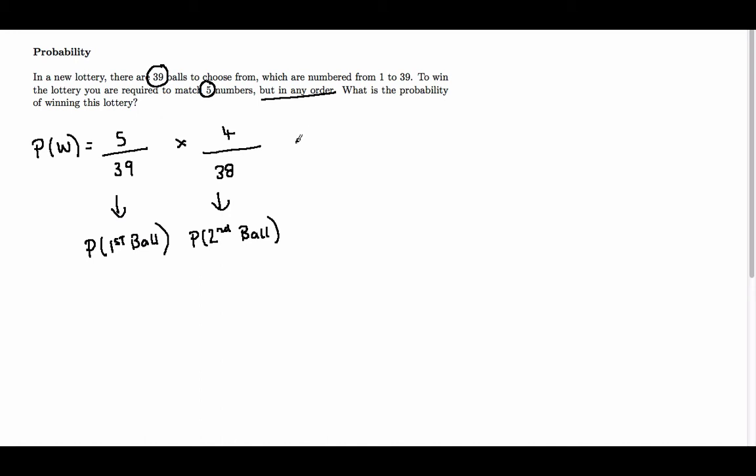Following this, the probability of getting the third ball - we've now had two balls being taken out. We only have three more that we can match with, so we have 3. And two balls have been taken out, so there's only 37 left in there. So this is the probability of the third ball.